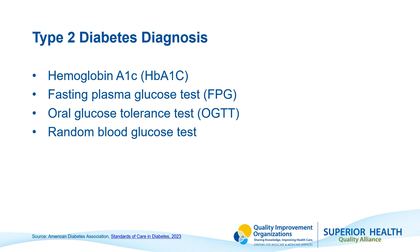The second one is the fasting plasma glucose test. This requires the patient to fast for eight hours — no food or drink except water — before being tested. The third one is the oral glucose tolerance test, and this is the same test used for women in pregnancy.